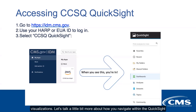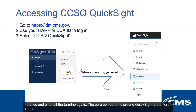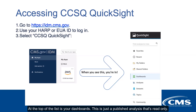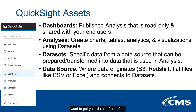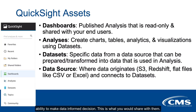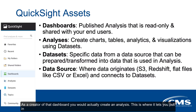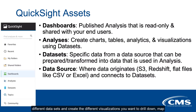Let's talk about how you navigate within the QuickSight instance and what all the terminology is. The core components of QuickSight are different assets. At the top of the list is your dashboards — this is just a published analysis that's read-only, and this is what you would share with end users who you want to get your data in front of, enabling them to make data-informed decisions. As a creator, you would actually create an analysis, which lets you pull in different data sets and create visualizations — drill-downs, map features, and everything available within QuickSight.